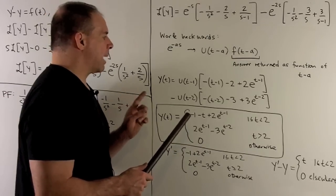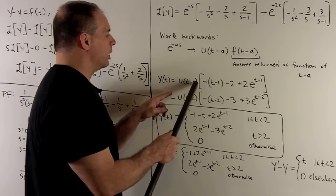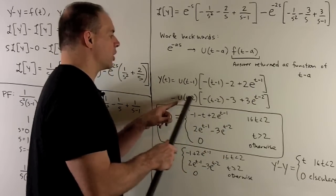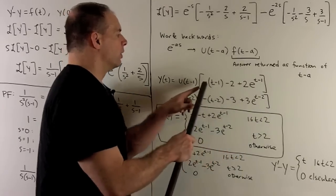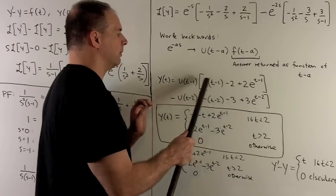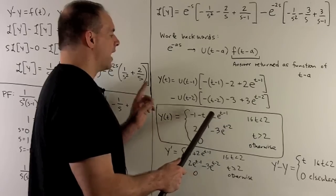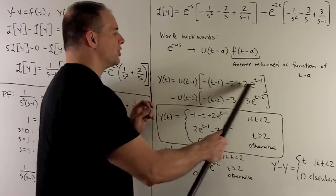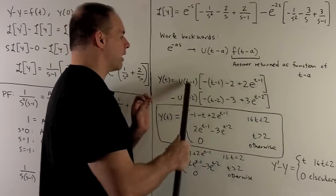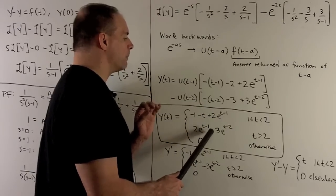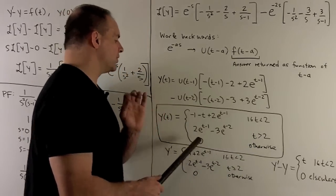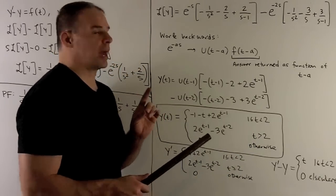For u of t minus one, that's zero up to one; from one to two we have that function active. At t equal to two, u of t minus two also kicks in. For the region from one to two we have the first set of terms, simplified. When t is greater than or equal to two, combining everything gives two e to the t minus one minus three e to the t minus two. Otherwise y equals zero.